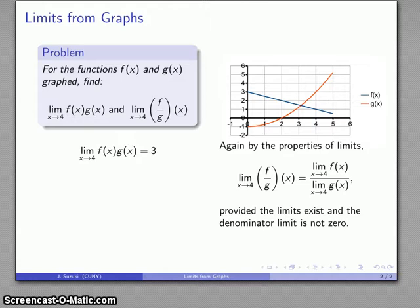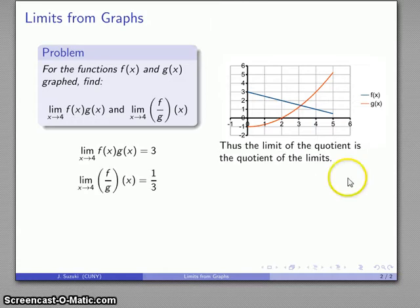Well I already know what those two limits are, so I can just substitute those in. As x approaches 4, my f(x) gets close to 1, my g(x) gets close to 3, and so the limit is going to be 1 over 3.